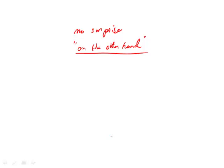The first part is 'no surprise.' The second part, after the semicolon, because of 'on the other hand,' the part that comes after — which is the blank — has to be the opposite of 'no surprise.' And the answer, therefore, is 'unexpected.'